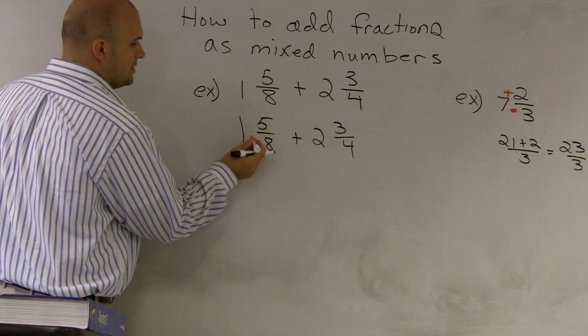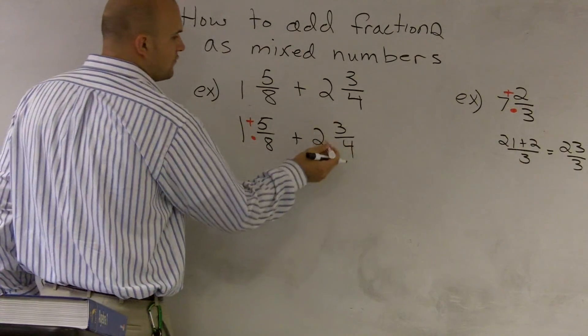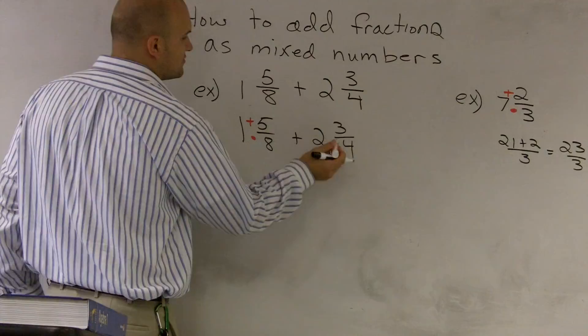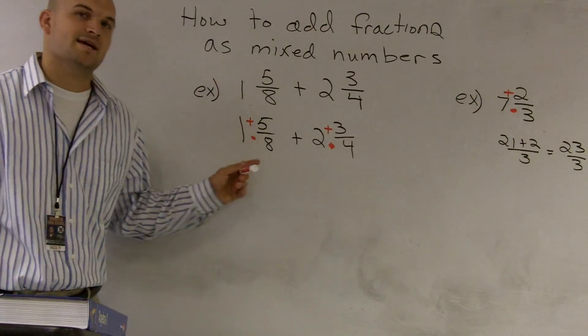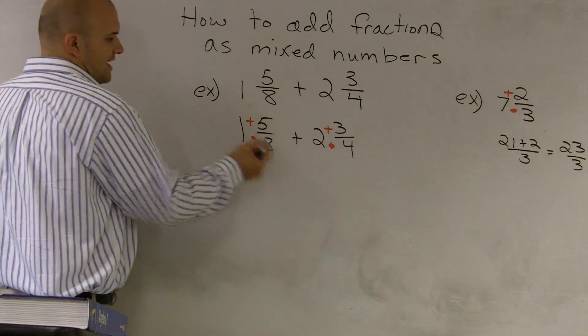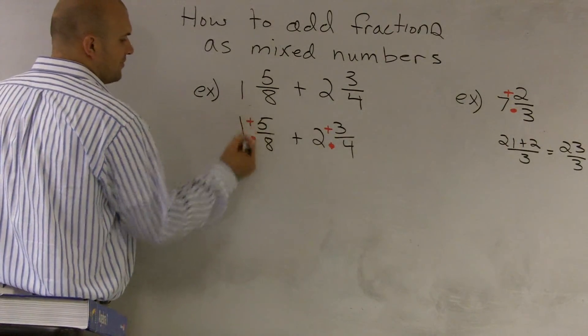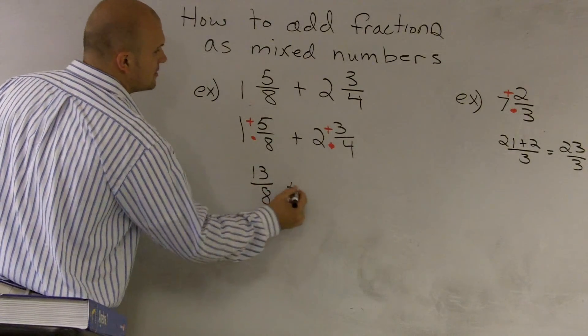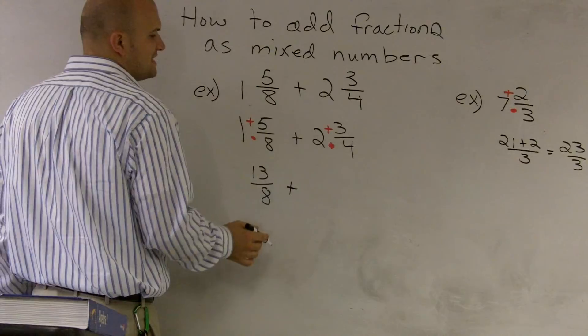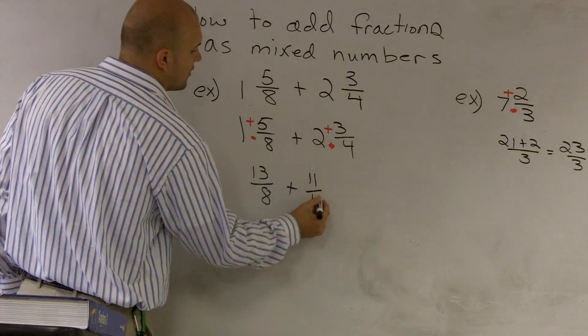So it'll be 8 times 1 plus 5, 4 times 2, and then plus 3. And remember, our denominator is still going to remain the same. So 8 times 1 is going to be 8 plus 5 is going to be 13 over 8 plus 4 times 2 is 8 plus 3 is 11 over 4.